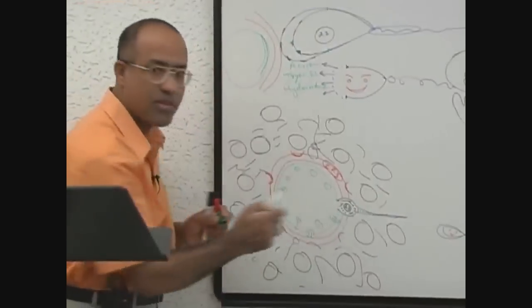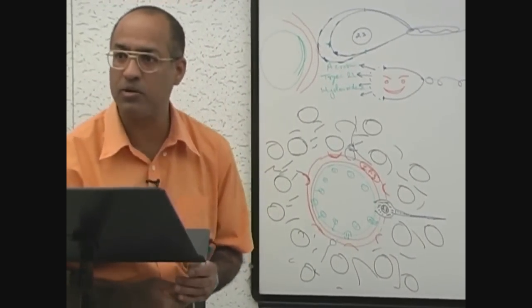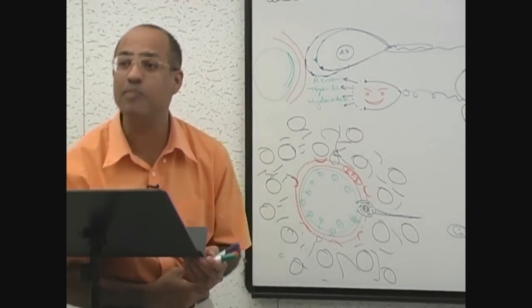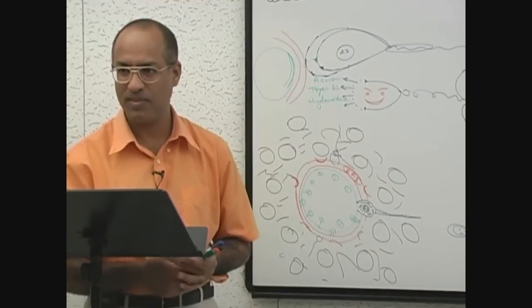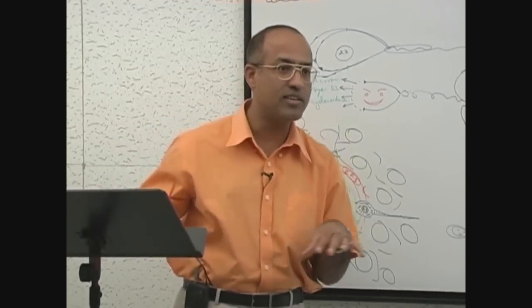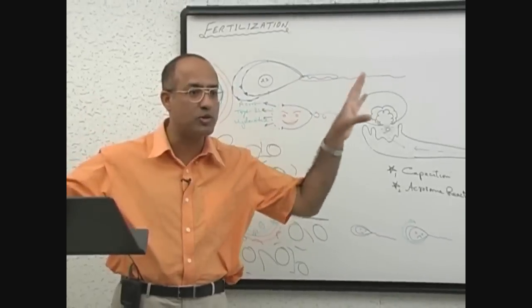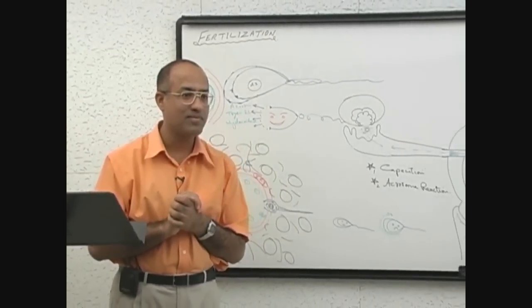These lysosomal enzymes will bring changes in zona pellucida and zona pellucida becomes impermeable to other remaining sperm. As I told you, the analogy is that there's a female sitting in a palace with 1000 windows and she is just waiting for someone to jump in from some window.